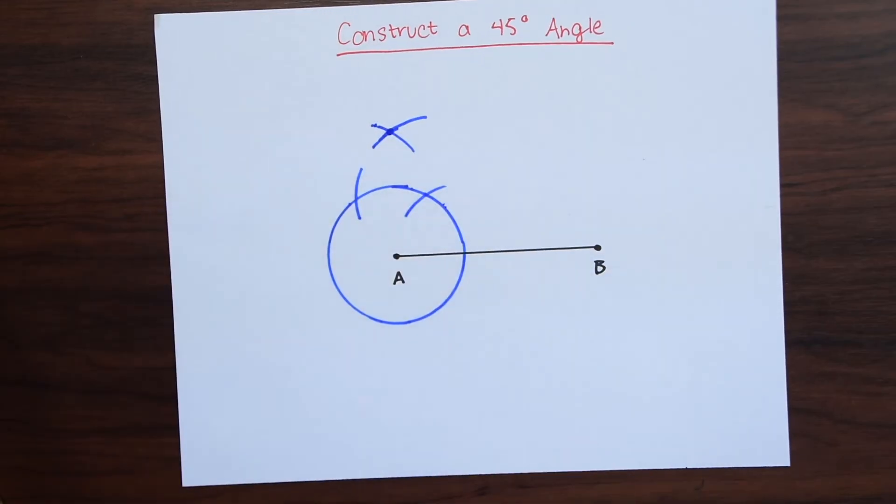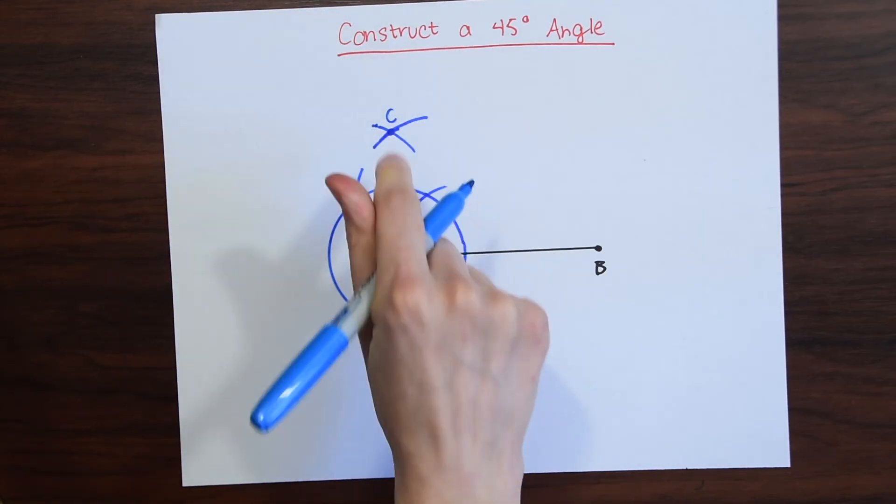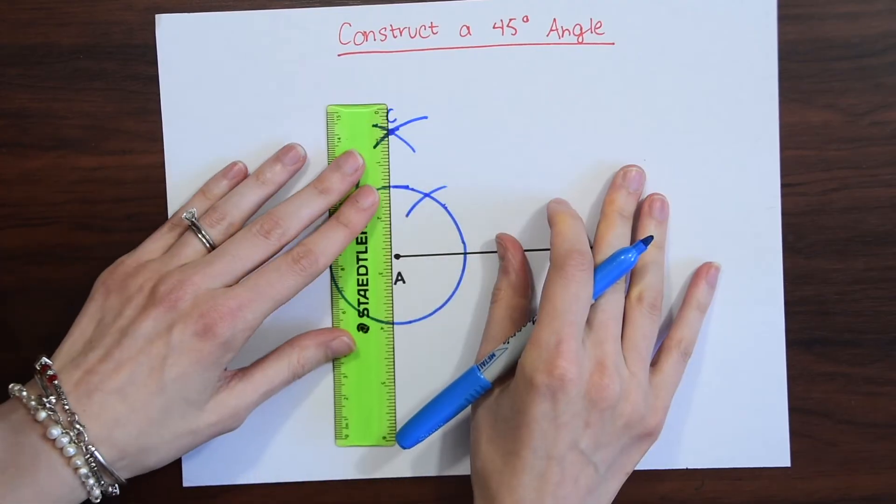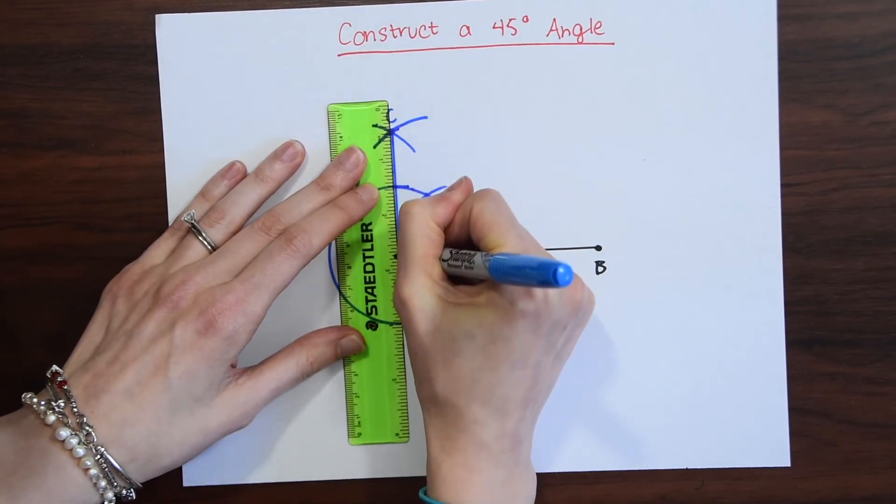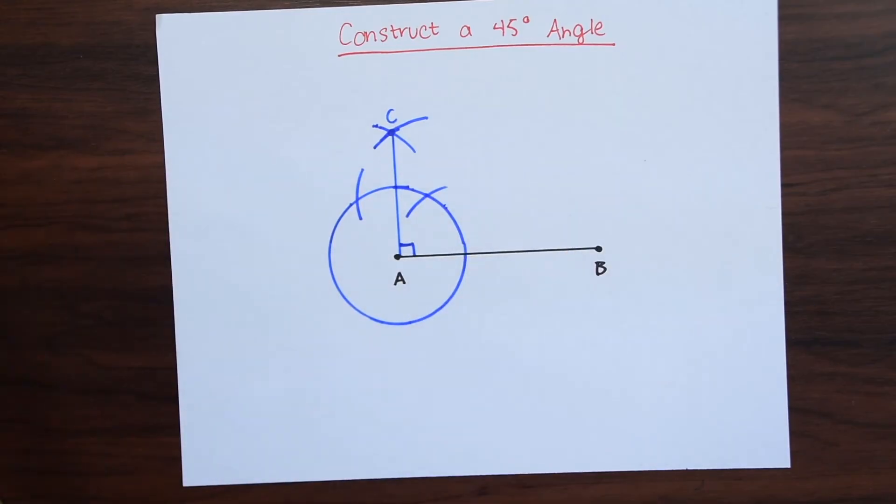Let's just mark that with a dot. If we connect this cross section, let's call it point C. Let's connect it to point A and notice we have a 90 degree angle. So that's what we just made, which is pretty cool.